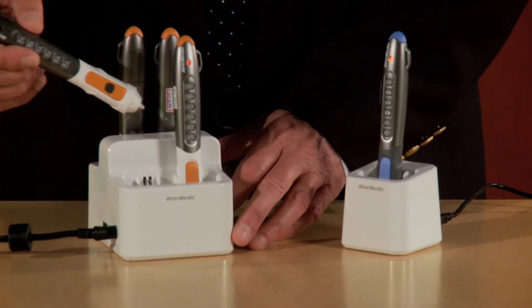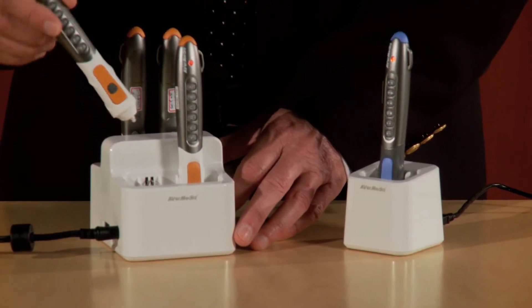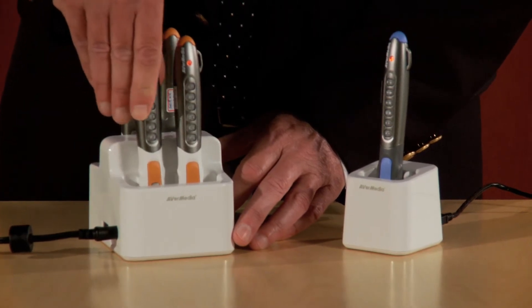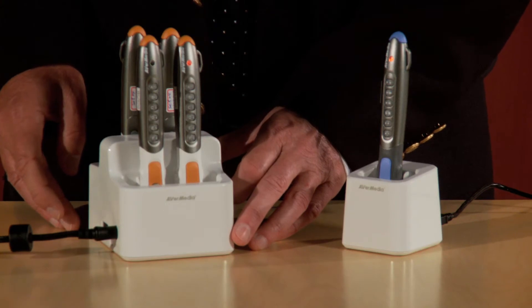AverPen also has a student version. The basic pack comes with four student pens and a charger base. To charge the pen just put it into the base making sure it seats well and connects. The orange light means the pen is charging while the green light means it's charged.